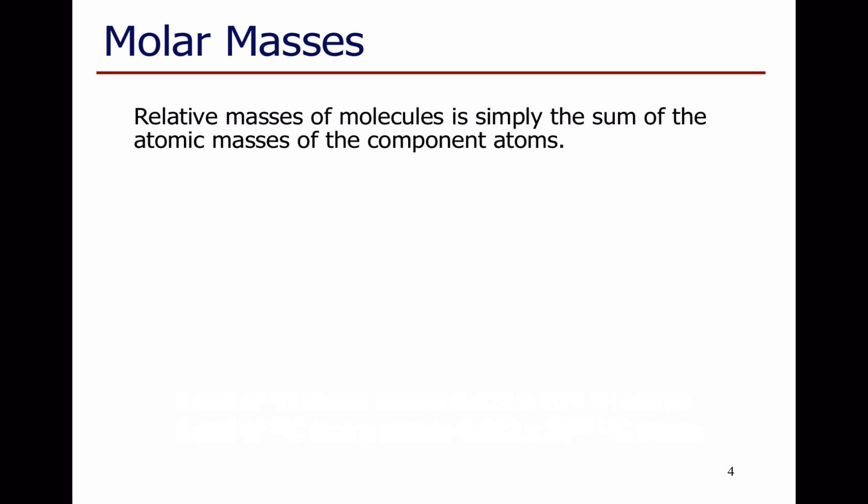When we're looking at molecules, we need to work out the relative mass of the molecule. This is just the sum of the atomic masses of the atoms. So for fluorine, I look up fluorine on the periodic table. A fluorine atom has a relative mass of 19, so two fluorine atoms has a mass of 2 times 19 — 38 grams per mole.